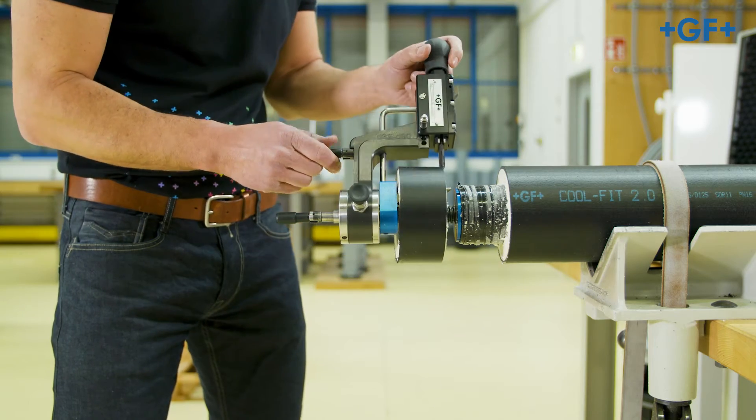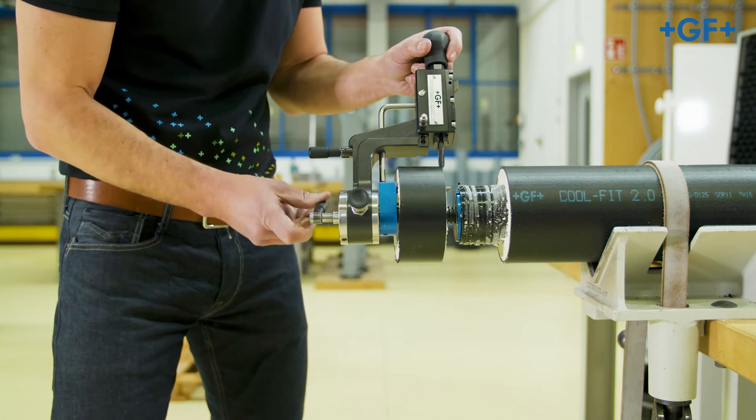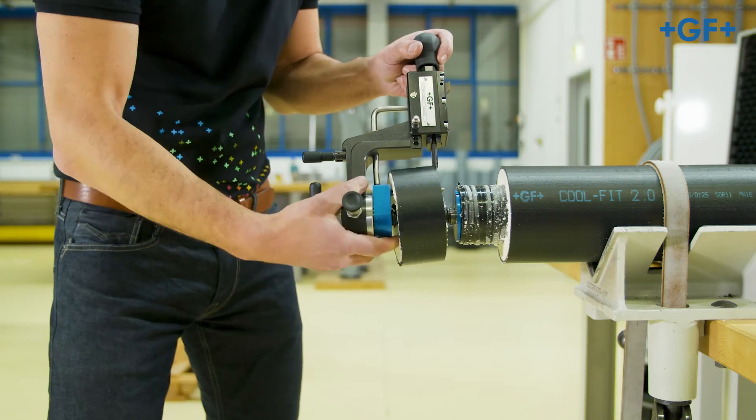Declamp the spindle taper by turning counterclockwise and remove it from the CoolFit pipe.